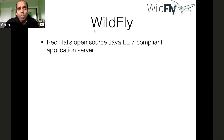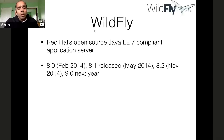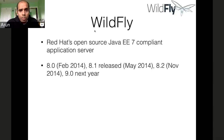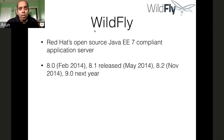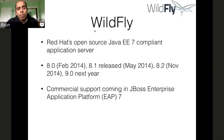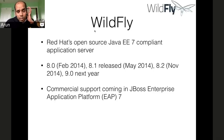One of the cool things about Wildfly is it maintains a regular cadence. Version 8.0 was released in February of this year, 8.1 in May, 8.2 last month, and 9.0 is already being planned for next year. There is an active set of developers inside and outside Red Hat working on Wildfly. The commercial support will be coming in JBoss EAP 7, so start your applications today on Wildfly and then migrate over when it's ready.